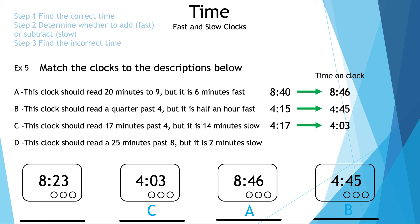Finally, the last one: this clock should read 25 minutes past 8, but it is 2 minutes slow. 25 minutes past 8 is 8:25. We subtract 2 to get 8:23, and that means the first clock is D.